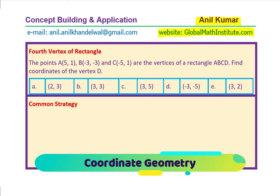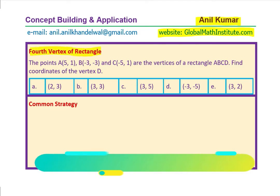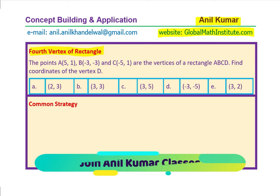In this video, we will understand a very important concept and answer a question from one of our students. It is regarding fourth vertex of a rectangle. Here is a question from coordinate geometry. The points A(5,1), B(-3,-3) and C(-5,1) are the vertices of a rectangle ABCD. Find coordinates of the vertex D.